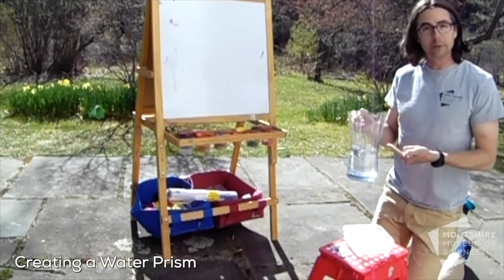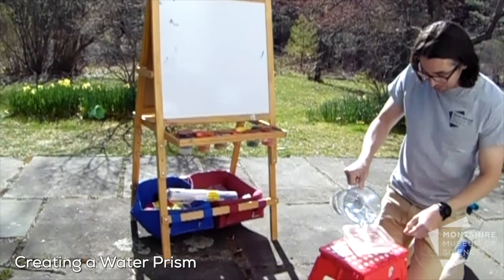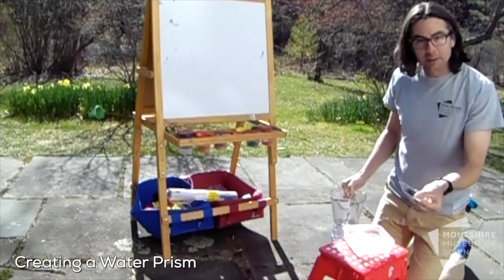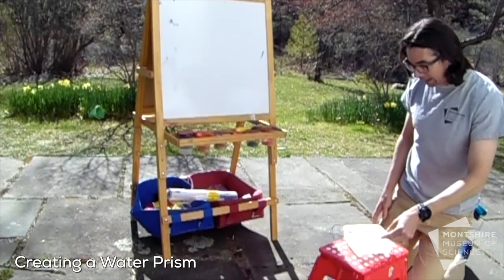To make a water prism, we need some water, a shallow dish, a mirror, and our sunlight.